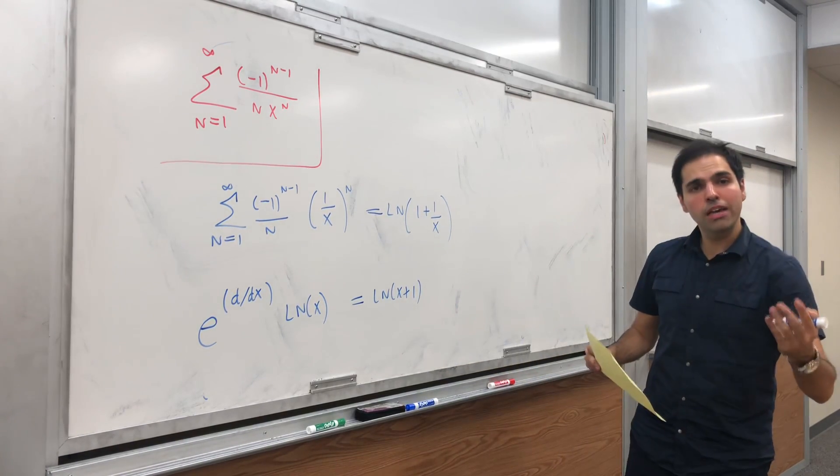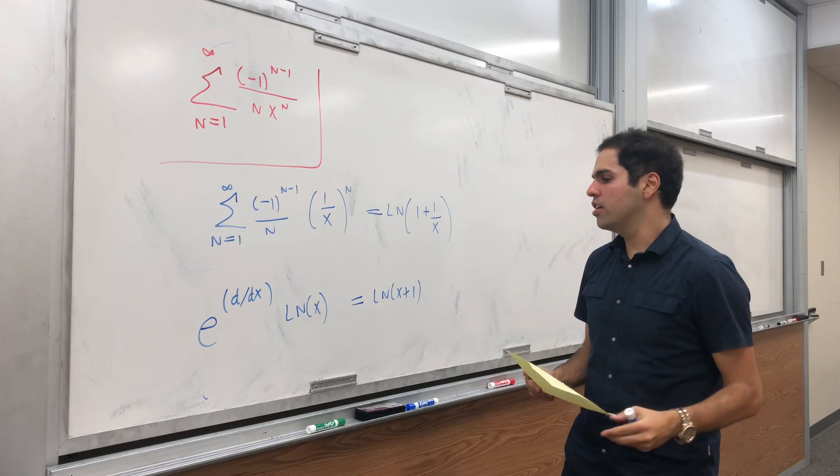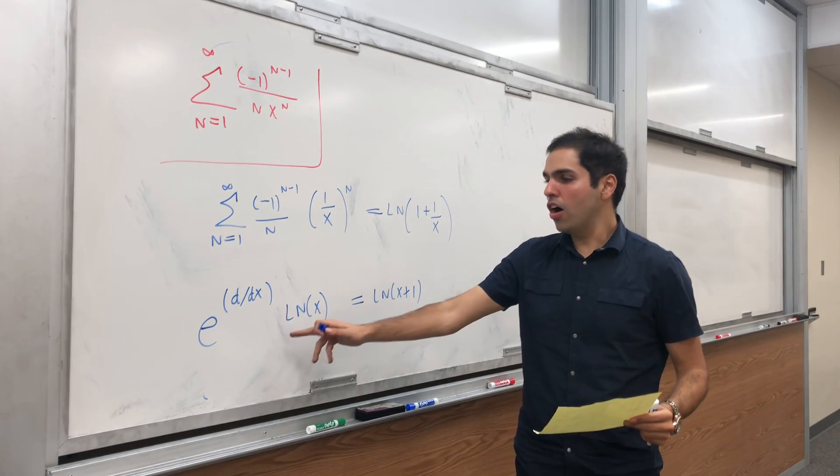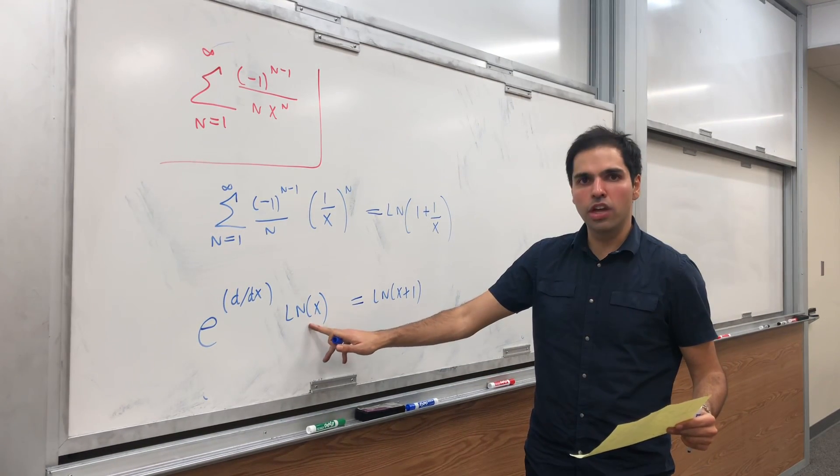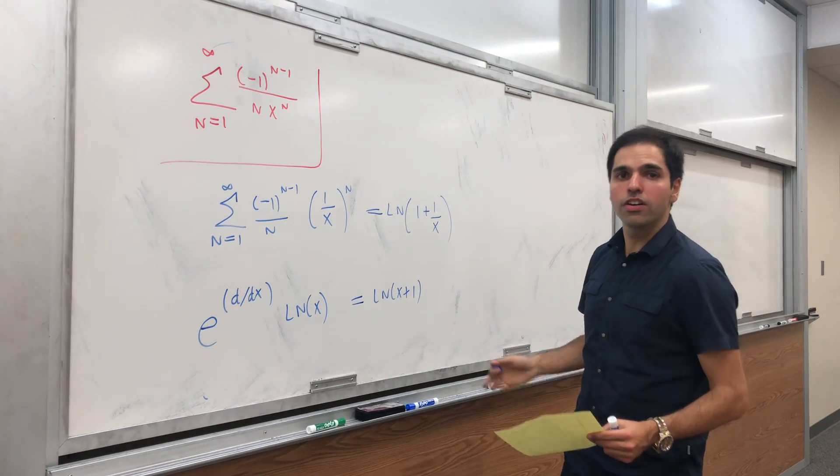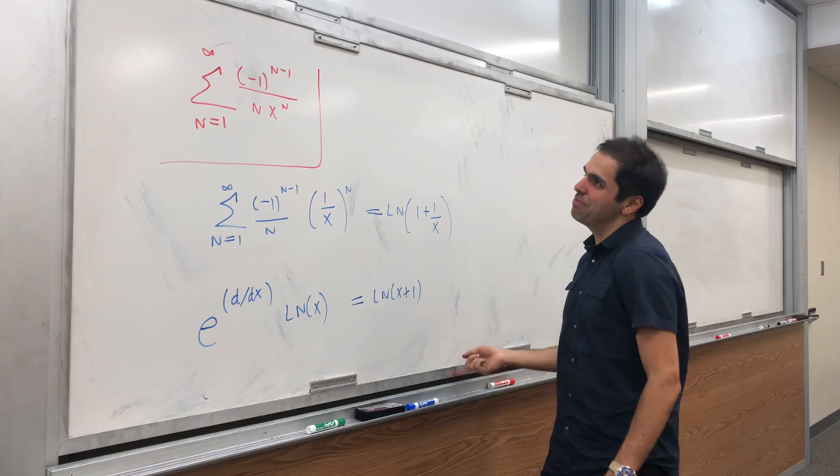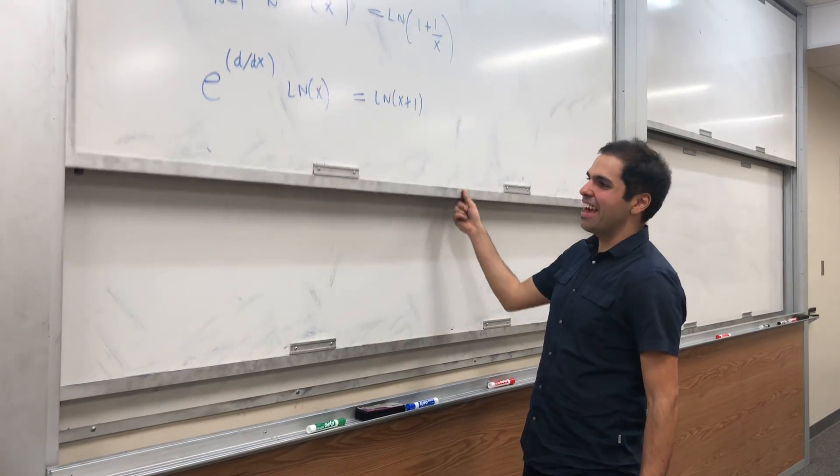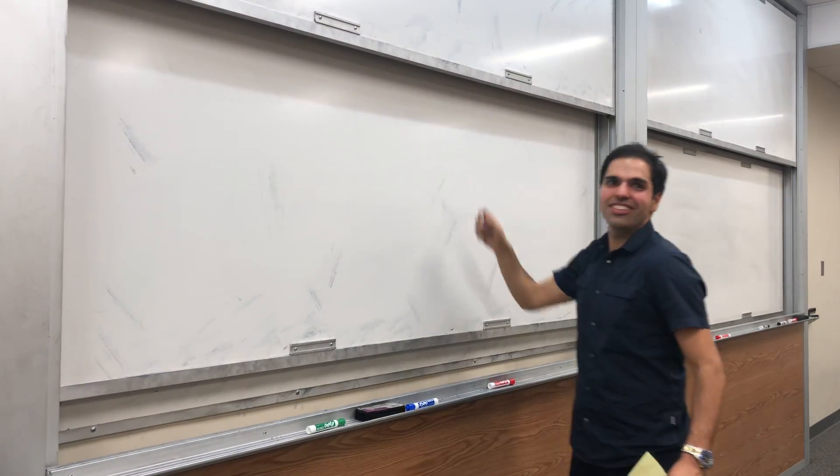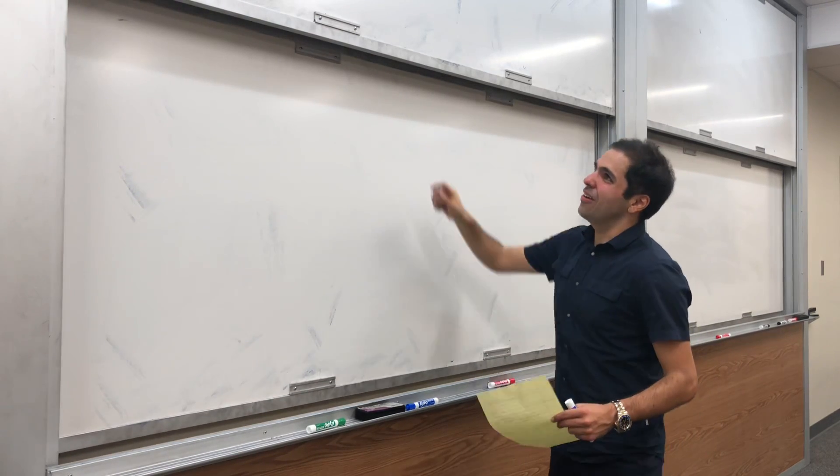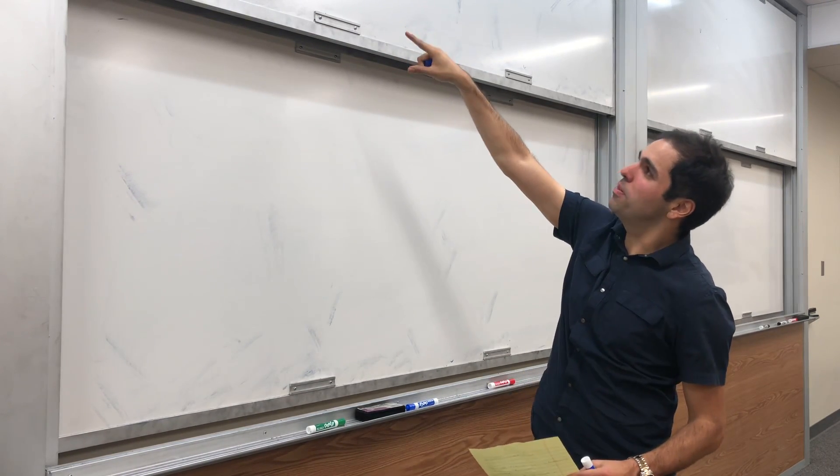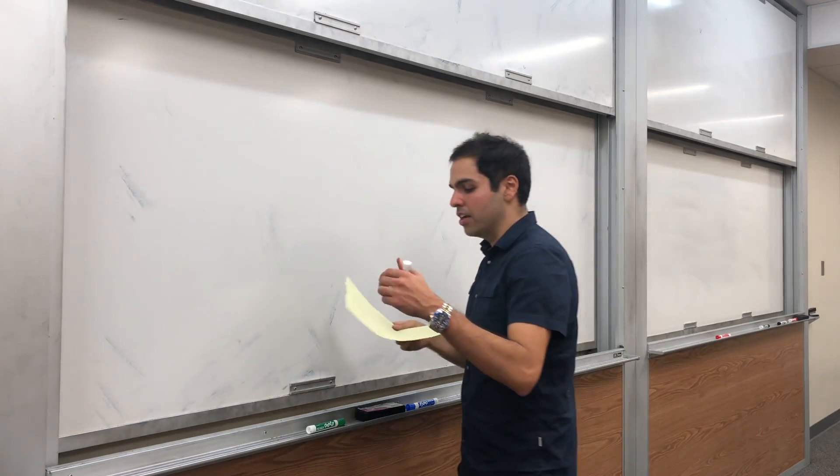Why? Because remember, the beautiful thing we saw in the previous video is that all the exponential derivative does is it shifts functions by one unit, which I thought was amazing, but apparently in quantum mechanics it's obvious. I still think it's cool. So on the one hand, the exponential derivative shifts ln(x) by 1. On the other hand,